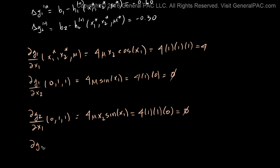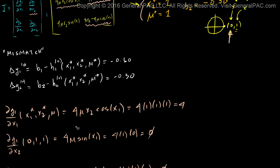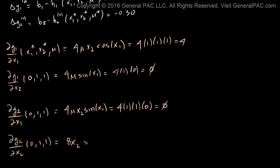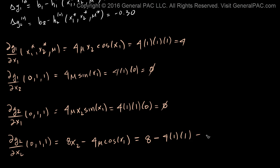The final partial derivative, dg2/dx2, equals 8x2 minus 4u·cosine(x1). Plugging in x2=1, u=1, cosine(0)=1: 8×1 minus 4×1×1 = 8 minus 4 = 4.